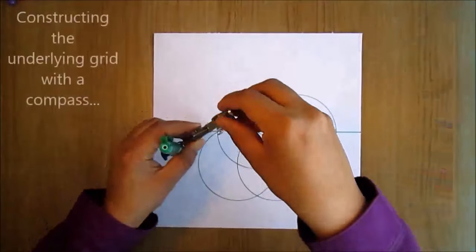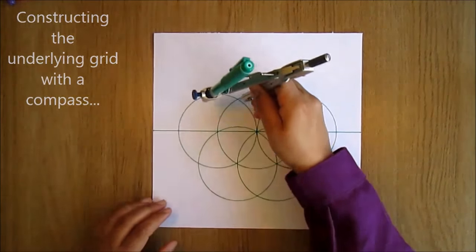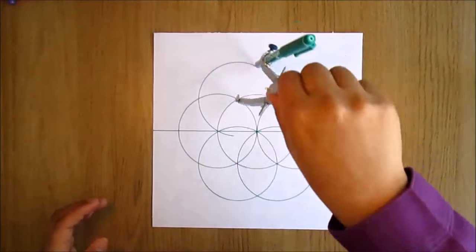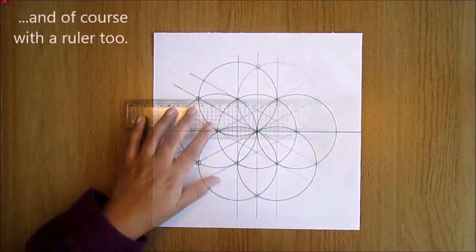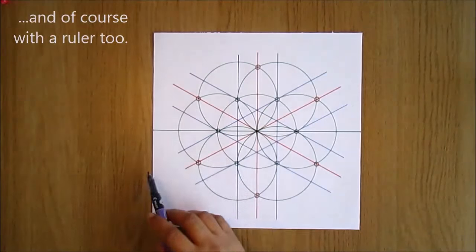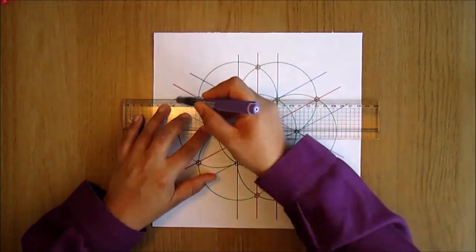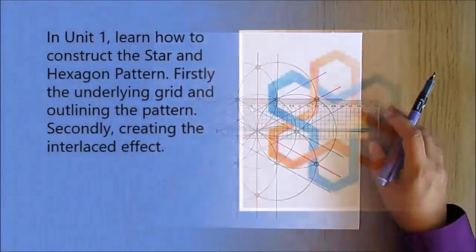In the videos I'll be constructing the underlying grid with a compass, and of course with a ruler too. I use felt tip pens of different colors so you can see them clearly in the video.